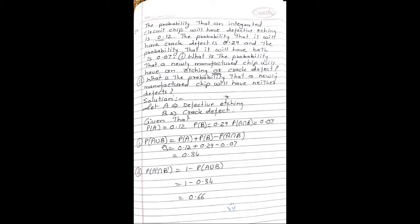In the first part, we find P(A ∪ B) using the addition theorem: P(A ∪ B) = P(A) + P(B) − P(A ∩ B) = 0.12 + 0.29 − 0.07. The answer is 0.34.